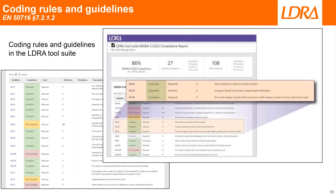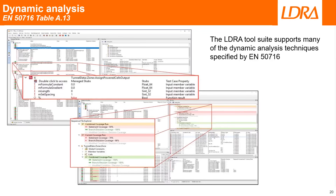A sensible approach is to choose tools with the option to run in a lightweight mode initially and to apply more complete analyses as development progresses. The LDRA tool suite supports almost all of the dynamic analysis requirements of EN50716. The unit test component, TBRUN, automatically generates test drivers and harnesses, or wrapper code, enables tests to be easily and efficiently executed, and stores both test results and data.